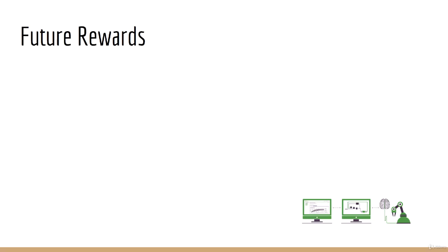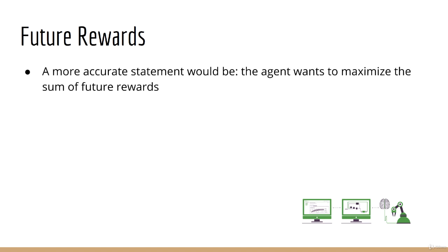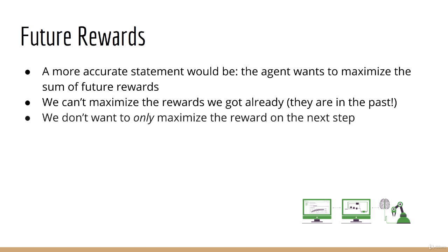Here's the answer. To state it more accurately, the goal of the agent is to maximize the sum of future rewards. Why is that? Well, it can't maximize the rewards it got already, those are in the past, they cannot be changed. Furthermore, we don't want to only maximize the reward on the next step.